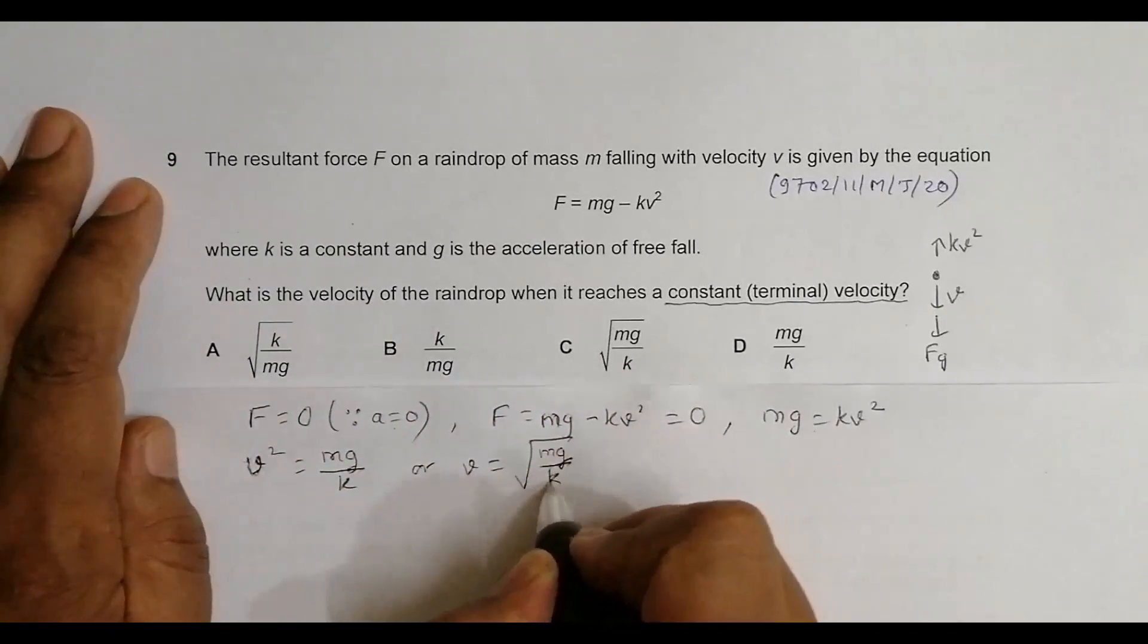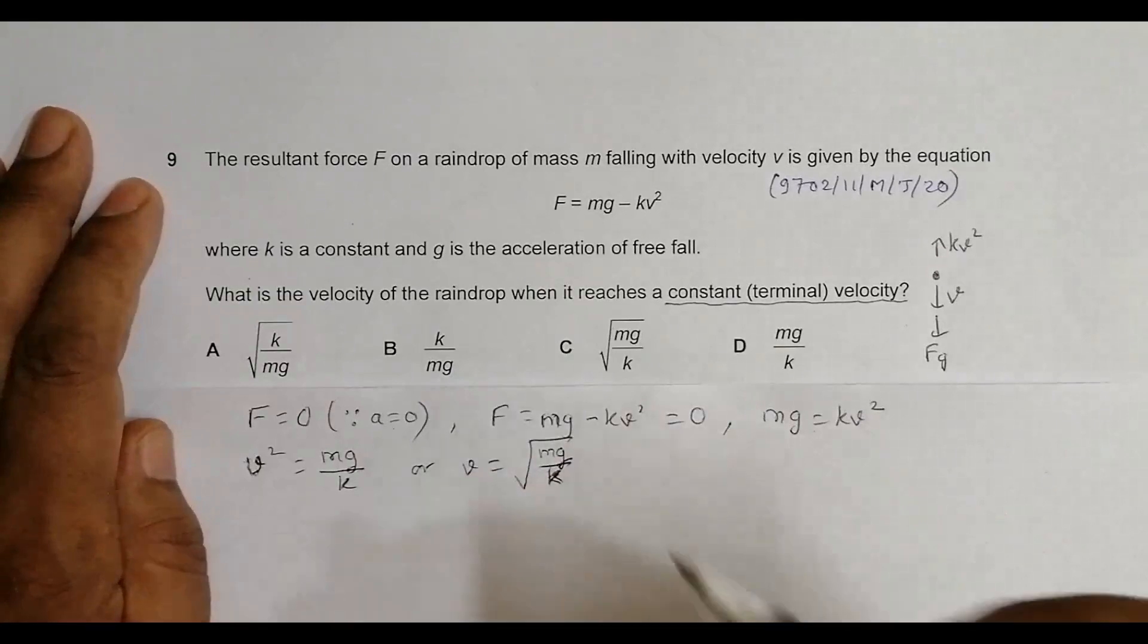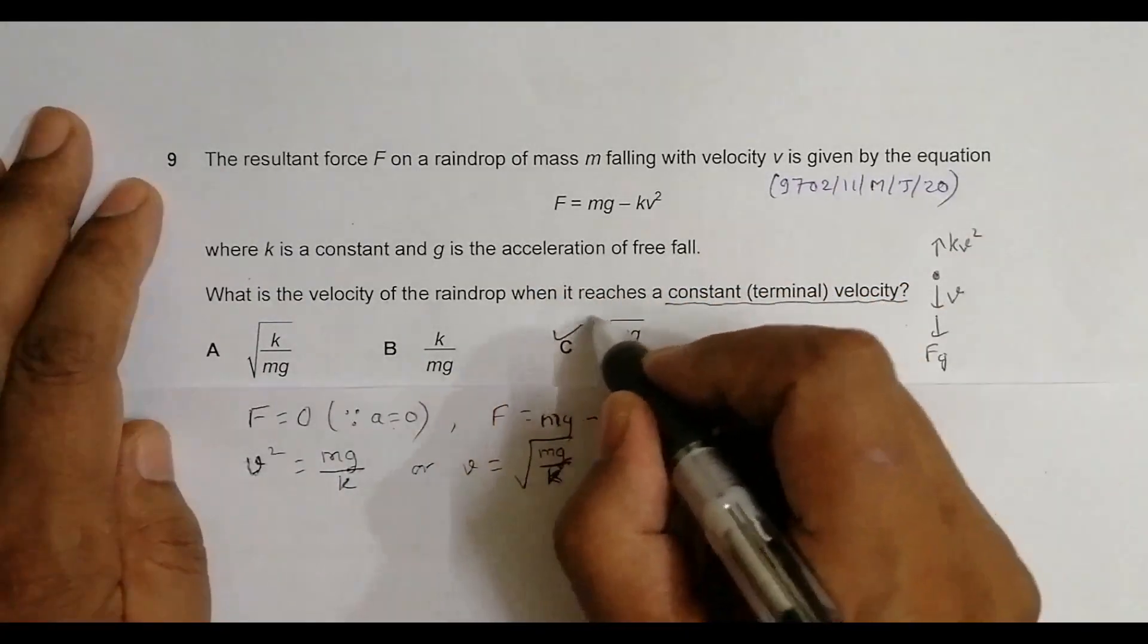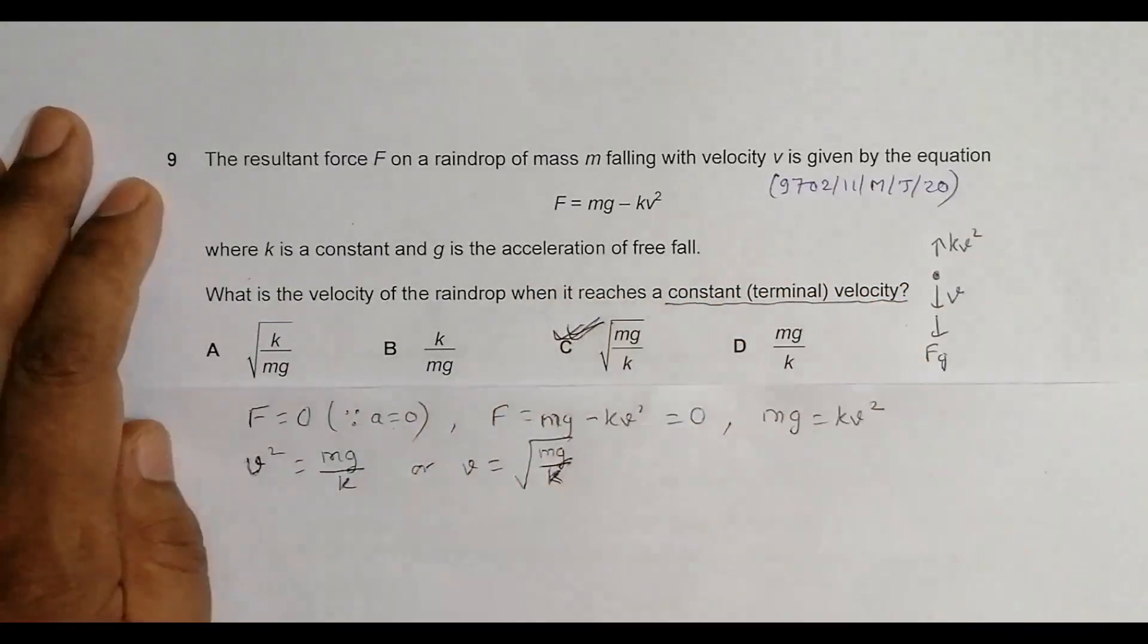So it might look a bit odd, but the answer is very simple. v equals root of mg by k. Going to the choices, choice number C is the correct choice.